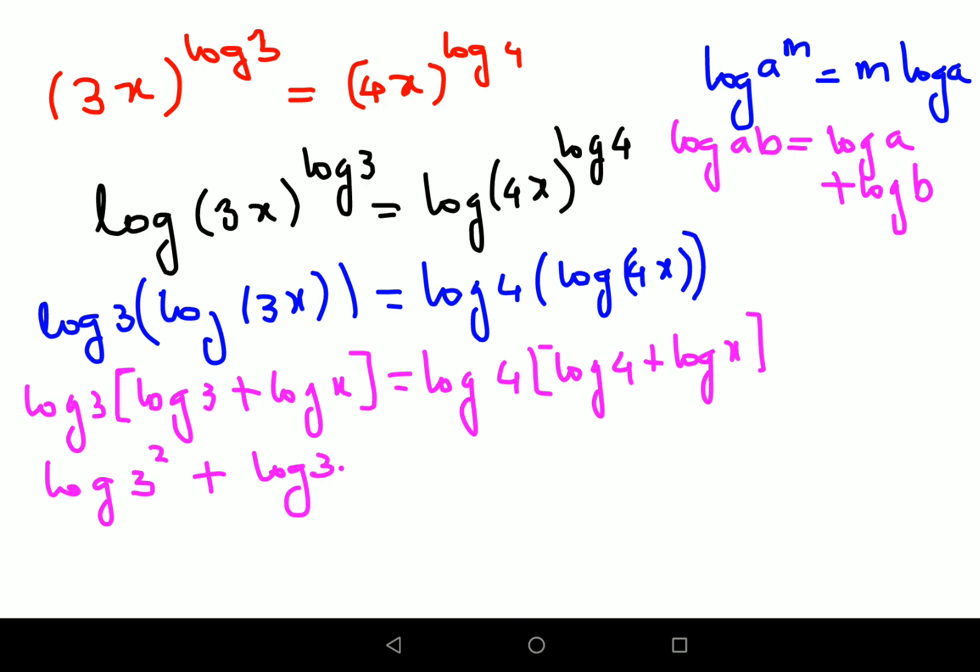Plus log 3 into log x equals log 4 squared plus log 4 into log x. Let's try to keep the numbers on one side, so we can write log 3 squared minus log 4 squared, and here we will have log 4 into log x minus log 3 into log x.